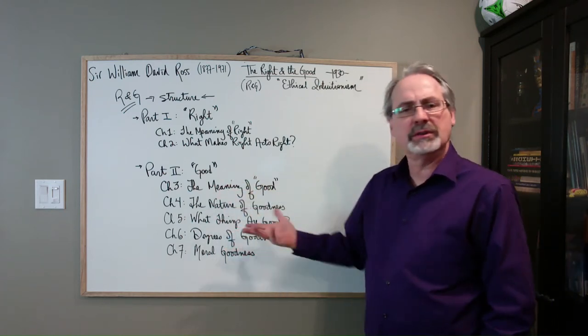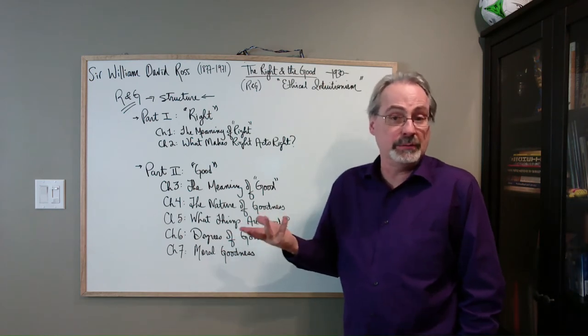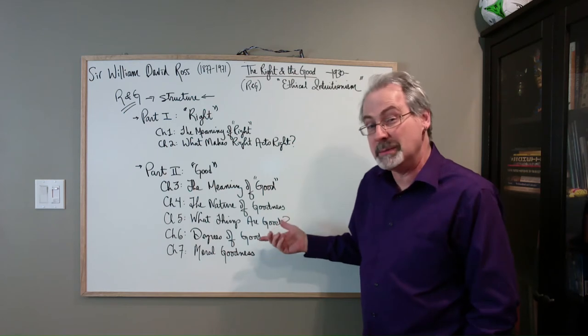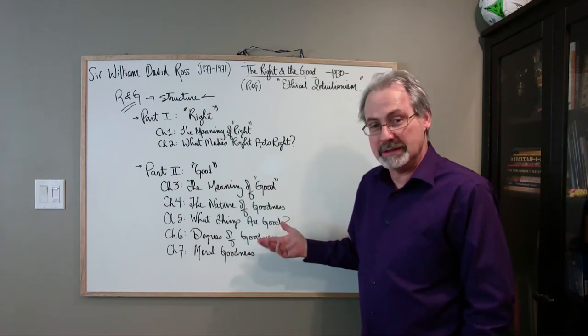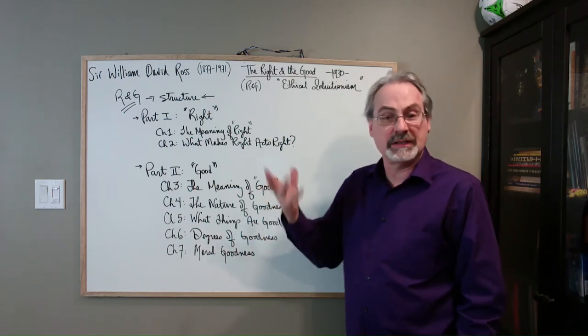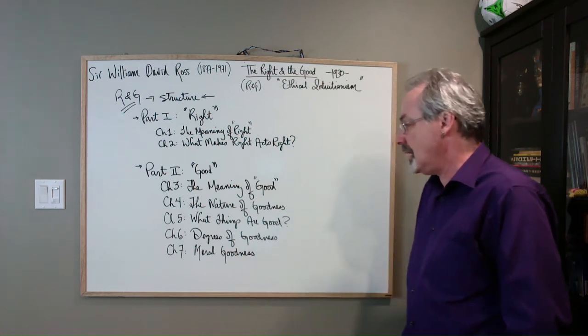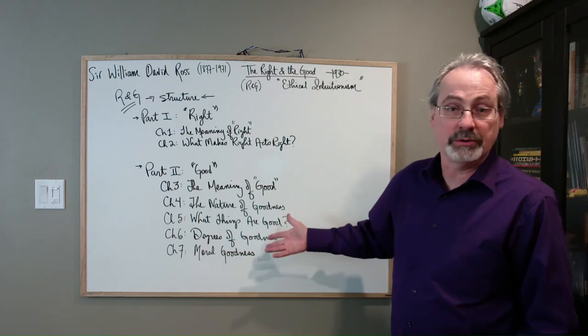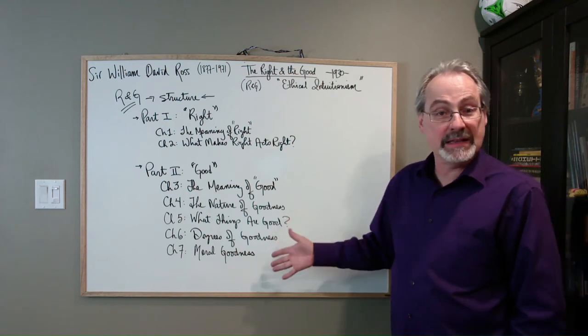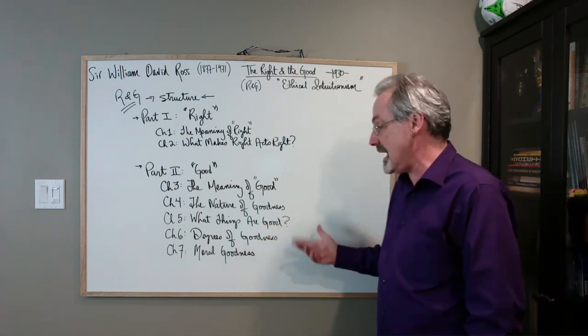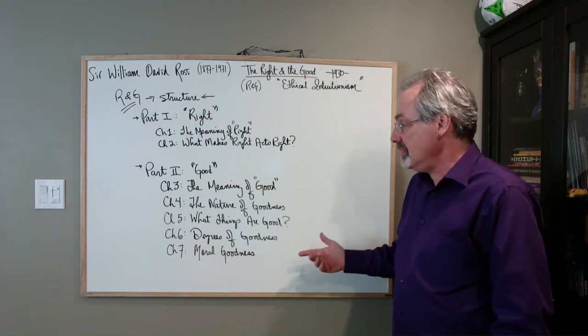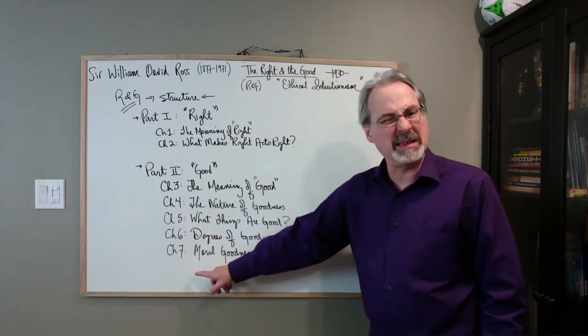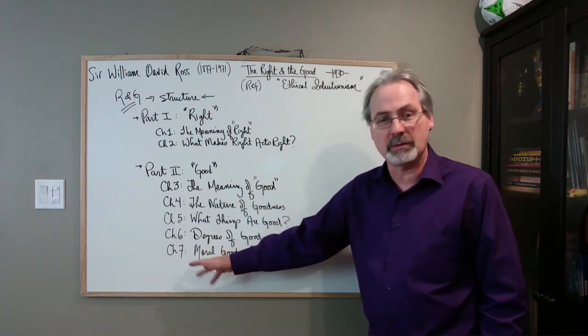What things are good? So you clearly understand that it's probably going to be some kind of pluralism, not just a single thing is good. And also talking about degrees. Now, the heading here doesn't tell you whether or not he thinks there are, but he thinks it's an important question. So he's going to analyze this. And then notice, we have a qualifier in the end. Moral goodness. So is that a special kind of good? Or is that ultimately what good is?